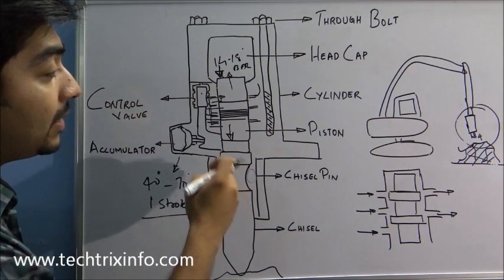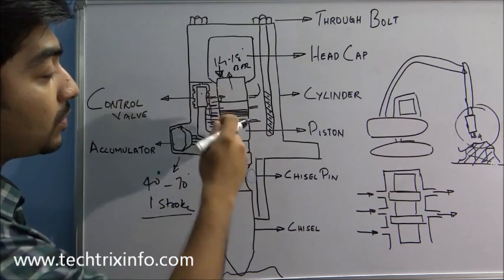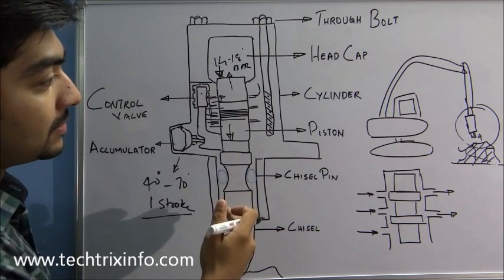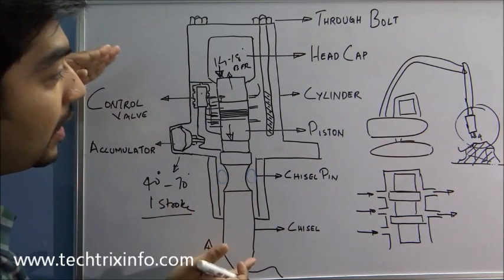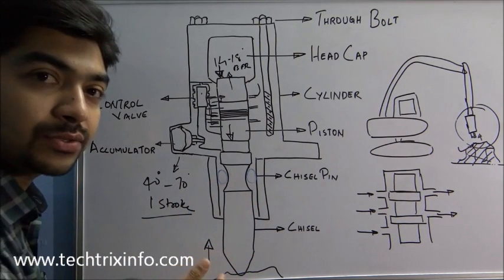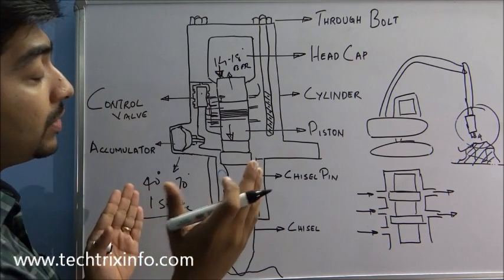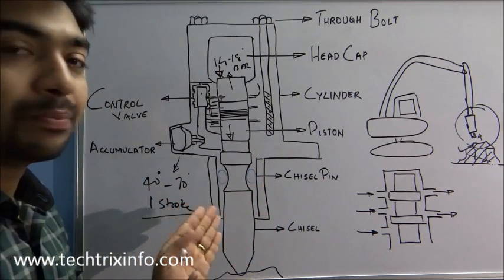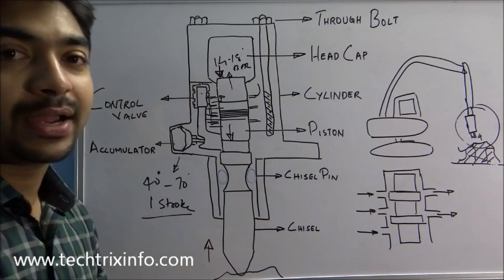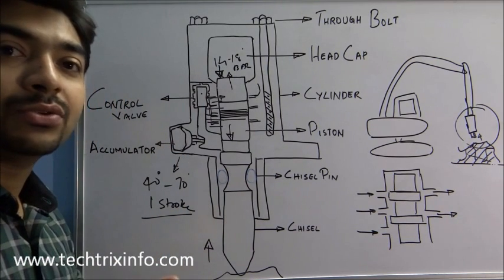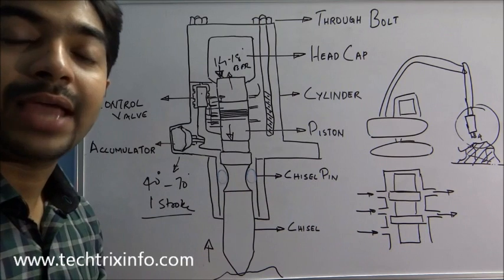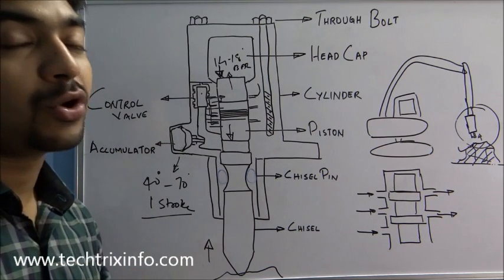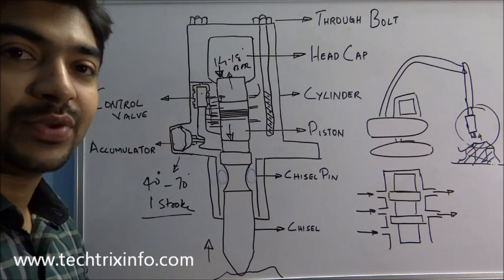The accumulator supports the hydraulic system inside the rock breaker to maintain the required hydraulic supply and pressure, avoiding hydraulic vibrations inside the system. That's basically how a rock breaker works. If you like this video please click the like button or drop a comment — you can also ask your doubts through comments. Subscribe to our channel for more technical videos. Thanks for watching.